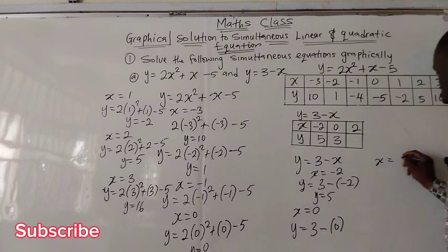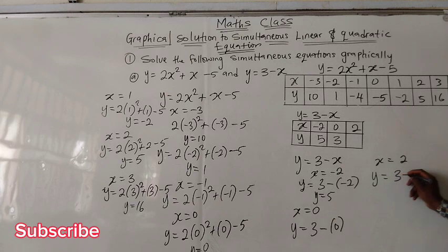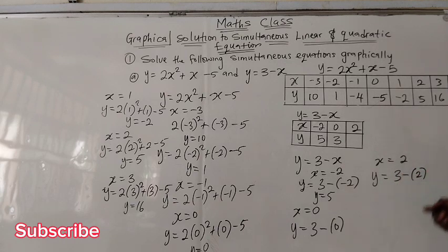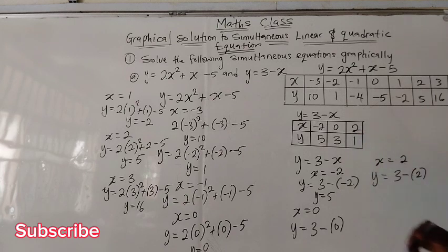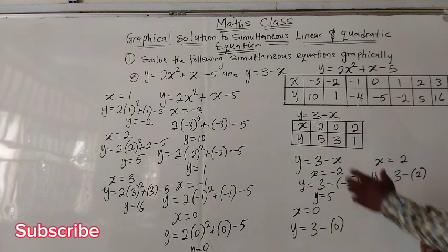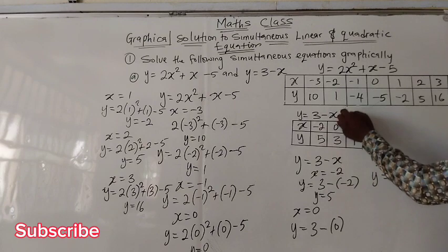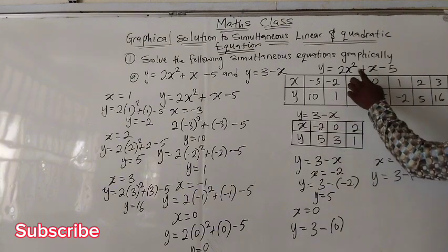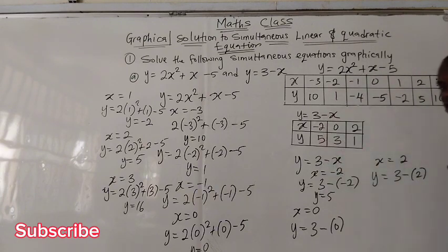Finally, when x is 2, we substitute: y equals 3 minus 2, which is 1. So we now have all the values of x and y for both the quadratic and the linear equation.